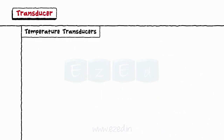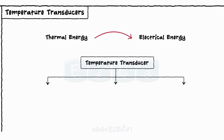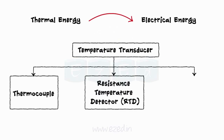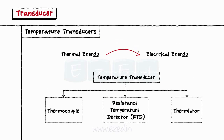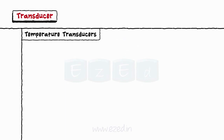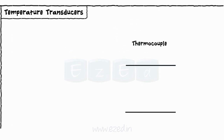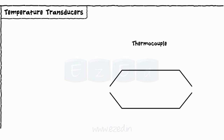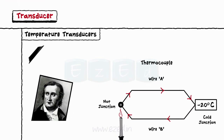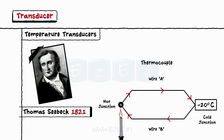Temperature transducers are devices which convert thermal energy into electrical energy. Different types of temperature transducers are thermocouples, RTD (resistance temperature detector), thermistor, etc. The first temperature transducer we will study is a thermocouple. A thermocouple circuit is formed when two dissimilar metals are joined at both ends and there is a difference in temperature between the two ends. The difference in temperature creates a small current and is called the Seebeck effect, after Thomas Seebeck who discovered this phenomenon in 1821.